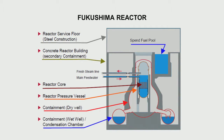Now let us go to the Fukushima reactor. Fukushima reactor is a boiling water reactor — it is a pressure vessel boiling water reactor, unlike the Chernobyl reactor. All the core elements are there, steam is produced, and it goes to the turbine. At the top they have a spent fuel pool where fuel that has seen enough burn-up in the core is kept in a tank full of water with continuous cooling so that its temperature is kept low. There are different containments: the reactor pressure vessel, the dry well, the wet well, and of course the concrete building.